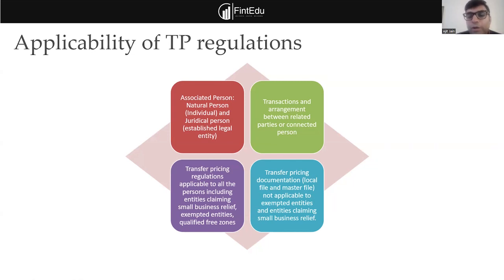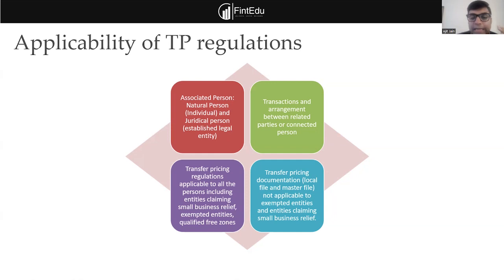When we evaluate related party relationships in financials, we not only look at what is disclosed in the financials but also the overall arrangement — vendor contracts, significant influence between third parties. Then there is the connected person concept. Any payment made to a connected person needs to be evaluated from an arm's length perspective — whether payments are wholly and exclusively for the business operations or not.